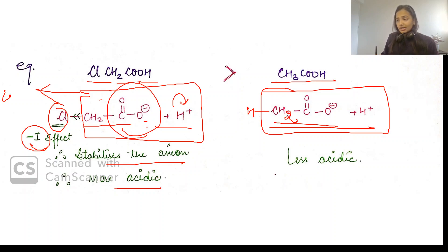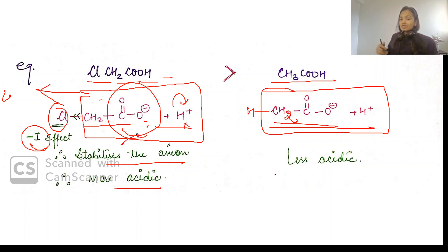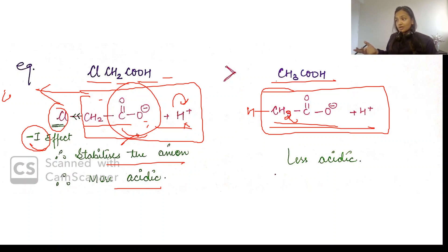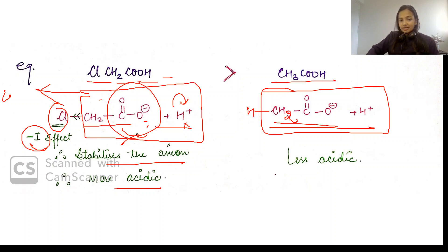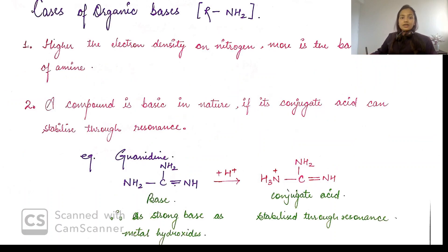Because if the conjugate base is stabilized, it will not re-form the bond with the proton. This means if this species has given its proton, it is now more acidic in nature. Now, guys, let's look at the cases of organic bases.